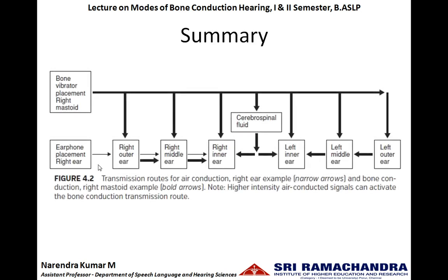In air conduction hearing, when the earphone or AC transducer is placed in the right ear, sound travels through the right outer ear, right middle ear, and right inner ear — only one ear is activated. Whereas when a bone vibrator is placed on the right mastoid, not only the right ear but the whole skull bone gets activated, and when the whole skull is activated, all parts of the hearing mechanism get activated.